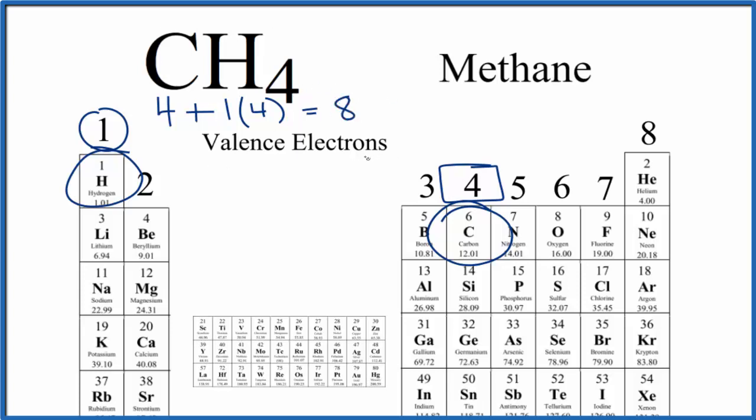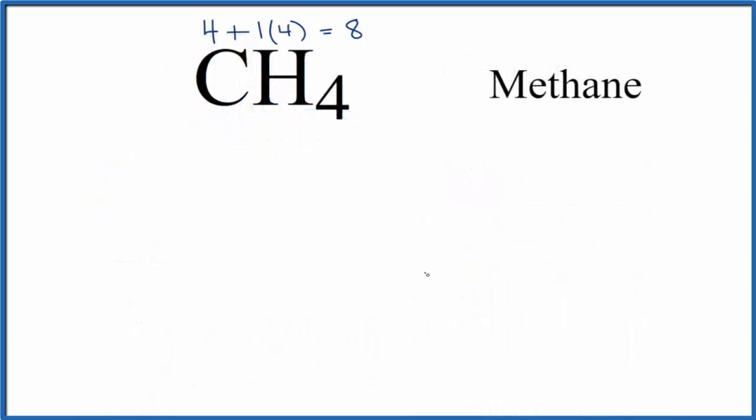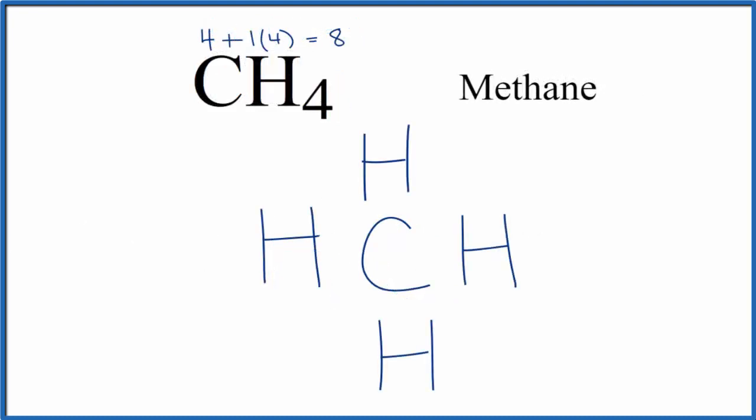So we can draw the Lewis structure now and show the type of bonds. For the CH4 Lewis structure, we put carbon in the center and then hydrogens always go on the outside. We'll put two electrons between atoms to form our covalent bond - two, four, forming that covalent bond there, six, and then two more. That uses all eight.